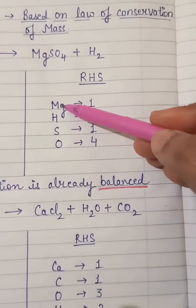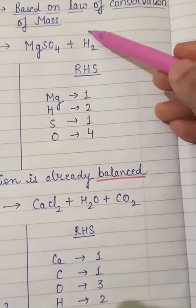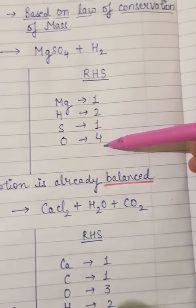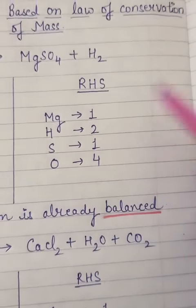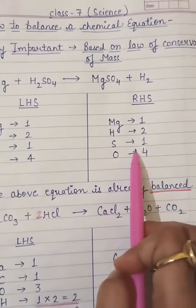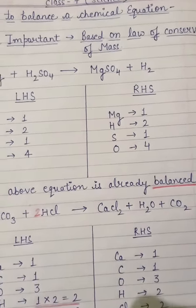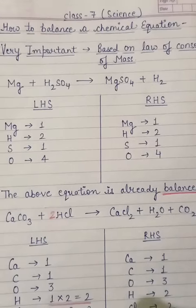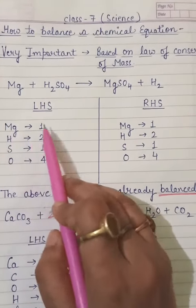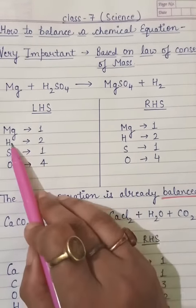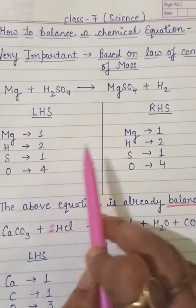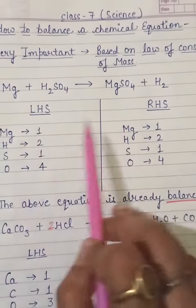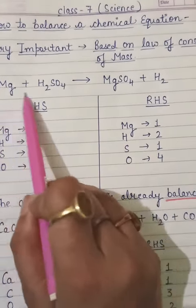I have written the number of atoms actually present in left hand side. Now look at RHS. In RHS how many Mg? One. Hydrogen from here? Two. Sulfur? One. Oxygen? Four. So I have written how many atoms are in RHS. Now we compare both sides to see whether the number of atoms on both sides are equal or not.